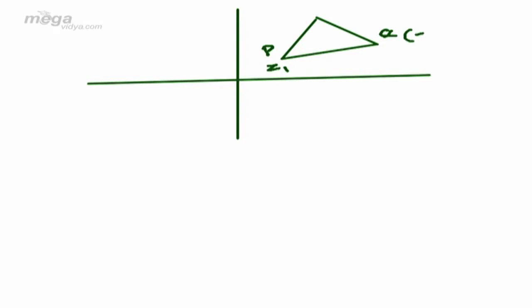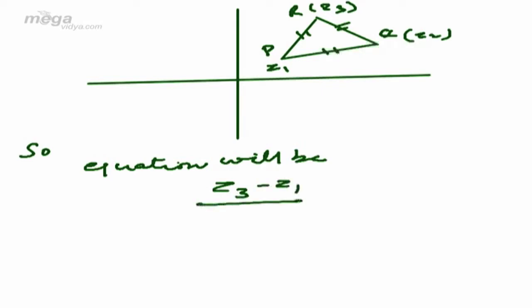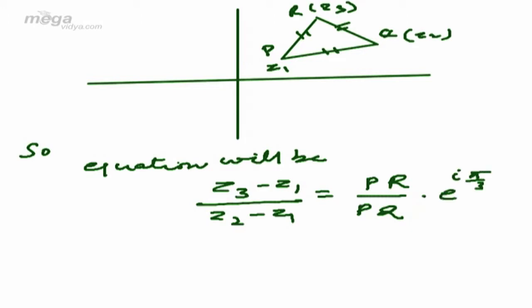Now let us come to the solution. Vertex P is denoted by Z1, vertex Q by Z2, and vertex R by Z3. This is an equilateral triangle whose all sides are equal. We apply Euler's theorem at point P: the side PQ is rotated by 60 degrees to the final position PR. So the equation will be (Z3 - Z1)/(Z2 - Z1) = (PR/PQ) · e^(iπ/3), where π/3 is the angle between the two sides.